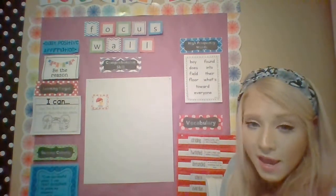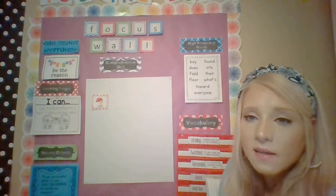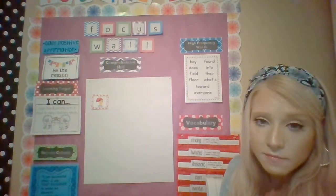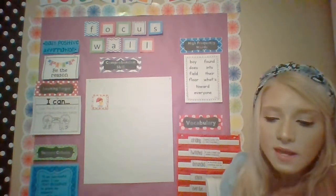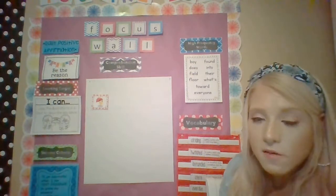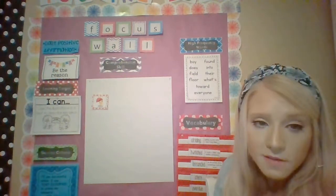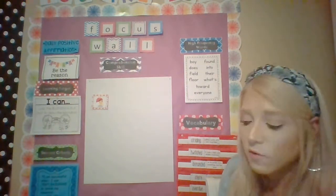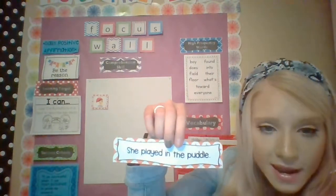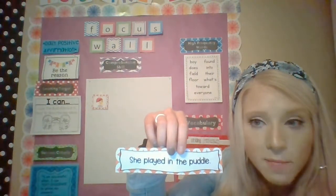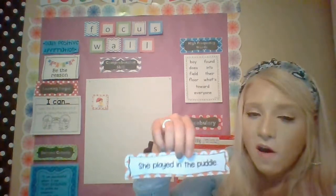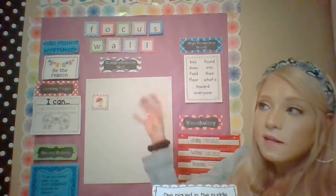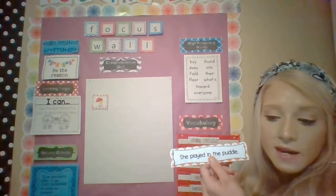Brainstorm — think in your head — what could be a detailed description of what is happening in the picture? It's not just a girl holding an umbrella. You can use details, you can be creative. For example: it's a girl playing in a puddle. She's holding an umbrella because it's probably raining, and because it's raining it caused a puddle and she's playing in it. See how detailed that was? That's called using the illustration to create key ideas and details.